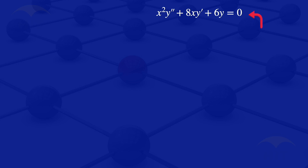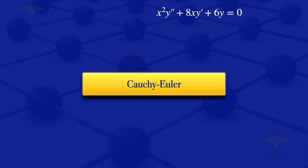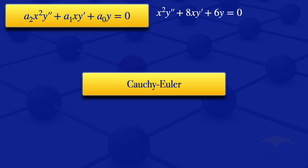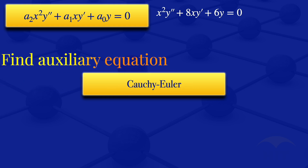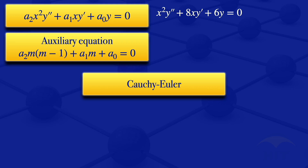This equation is in the form of a Cauchy-Euler equation, because it has the form a2 times x squared times y double prime plus a1 times x times y prime plus a0 times y equals 0, where a0, a1, and a2 are constants. To find the general solution of a Cauchy-Euler equation, we first have to find the auxiliary equation.